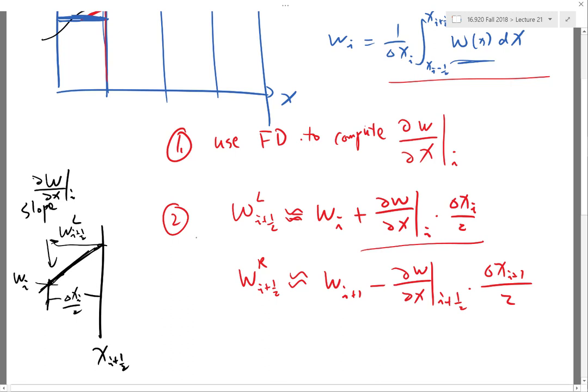On the other side, I'm doing the same. If this is W_i+1 and I have another slope, the derivative at X_i+1, then this spacing here is delta X_i+1 divided by two. And in this case, I have to subtract. This is basically the Taylor series approximation.